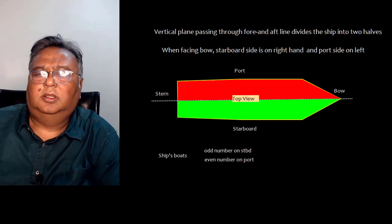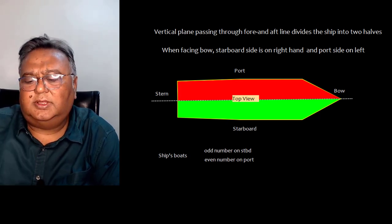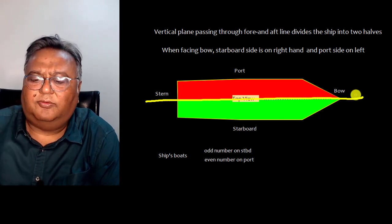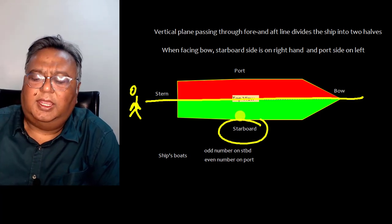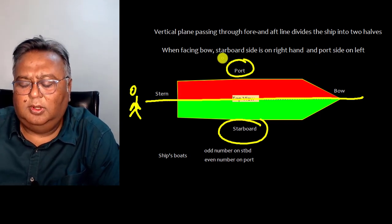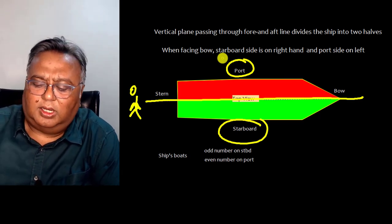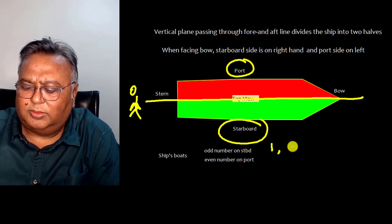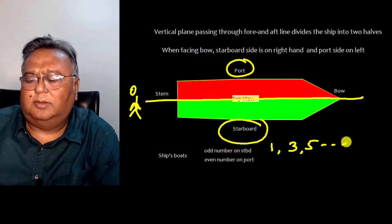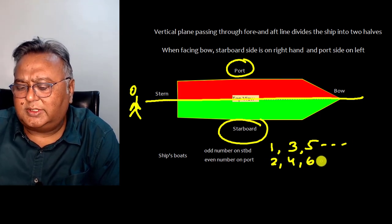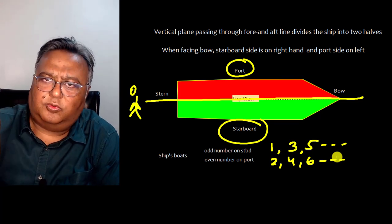Now why is this important? A vertical plane passing through the for-and-aft line divides the ship into two halves. When facing the bow, the right-hand side is starboard and the left-hand side is the port side. This has various significance: hatch numbers on the starboard side are odd numbers — board one, three, five and so on — while even numbers — board two, four, six — are on the port side.